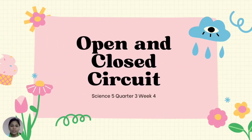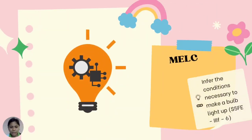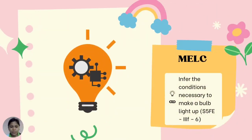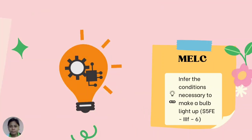Open and Close Circuit, Science 5, Q3, Week 4. Our Most Essential Learning Competency: Infer the Conditions Necessary to Make a Bulb Light Up.